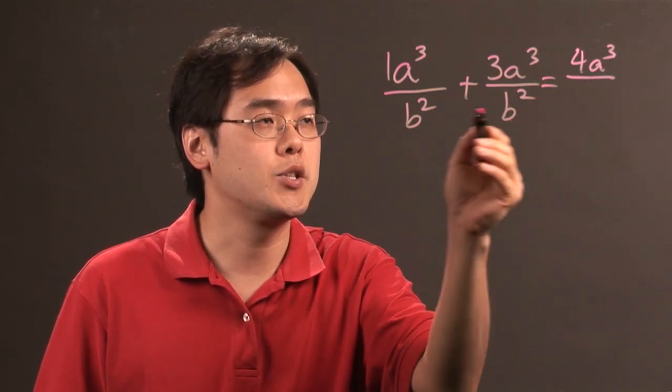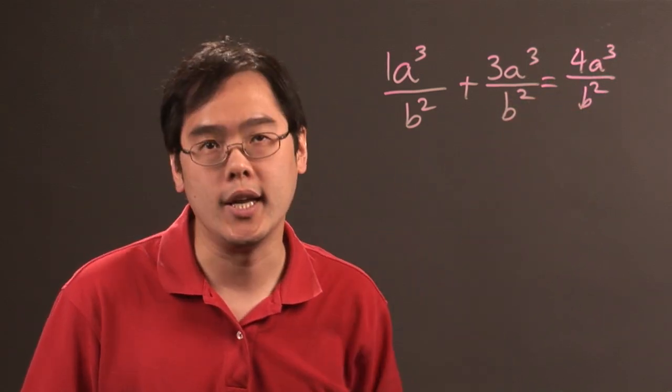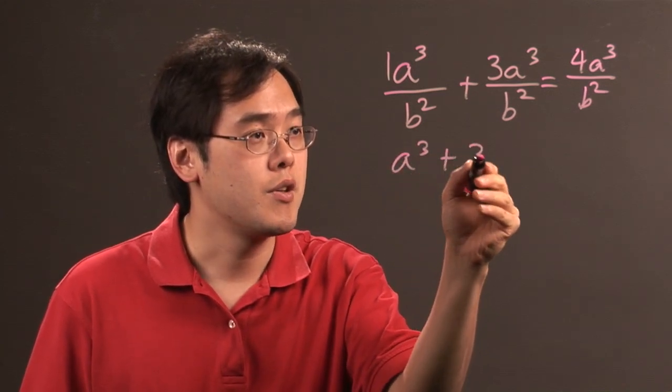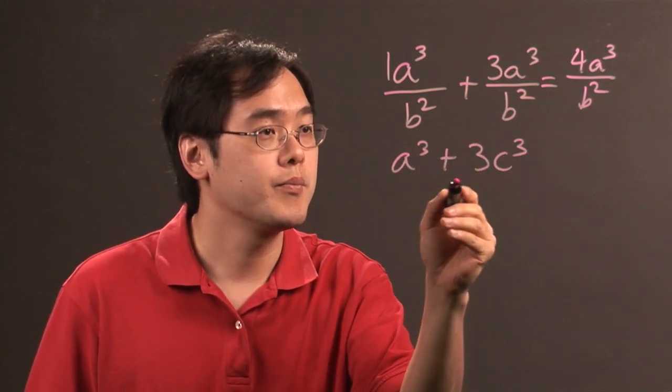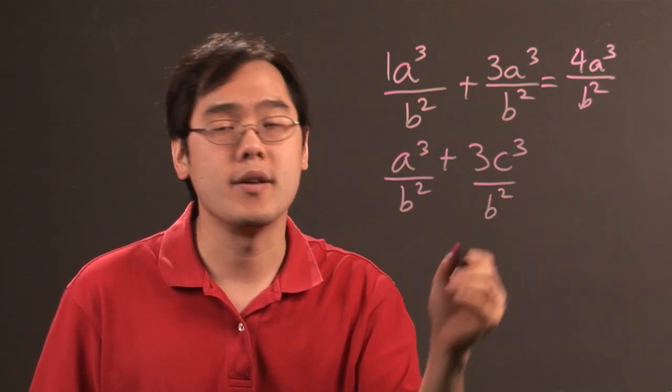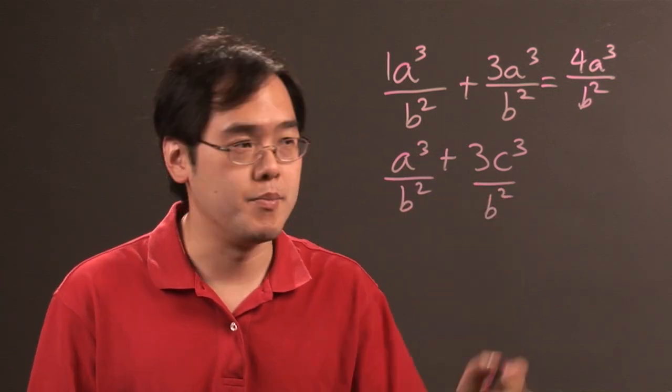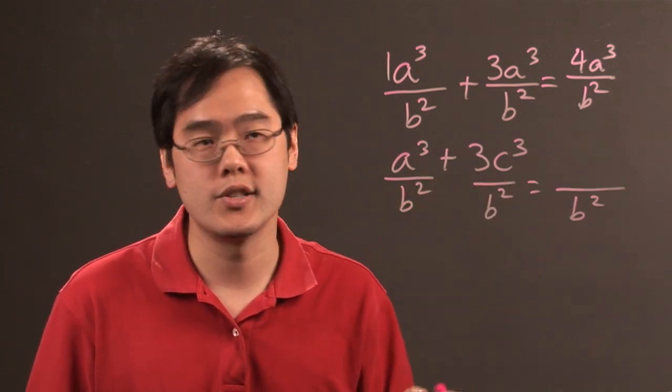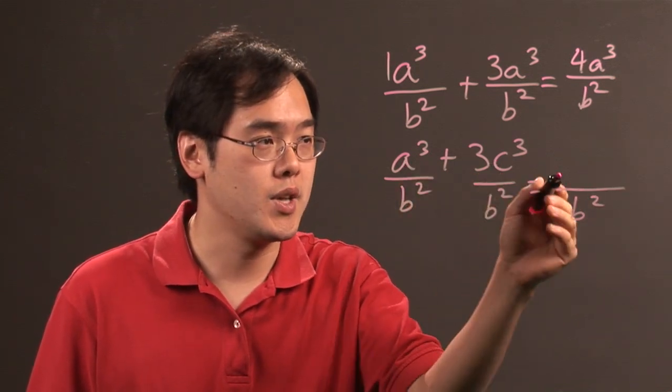Now if you have something like a cubed plus 3c cubed and they both have b squareds, you can combine them because they have the same denominator, but you can't really combine the numerators because of the different bases, so you have no choice but to write them as separate terms: a cubed plus 3c cubed.